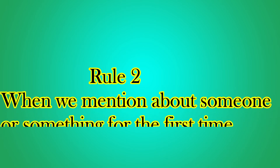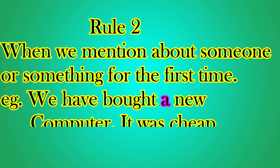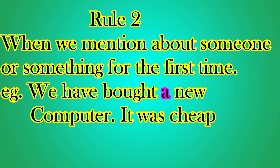The second rule: when we mention someone or something for the first time, we use A or AN. For example: 'We have bought a new computer and it was cheap.' Here we are talking about the computer for the first time. Notice the article is used before the adjective 'new,' which is then followed by the noun 'computer.' You can use the article before the adjective as long as a noun follows it.